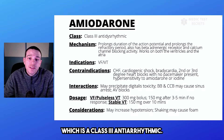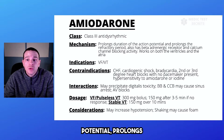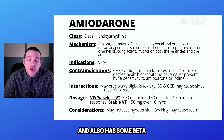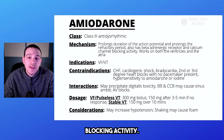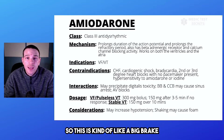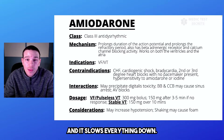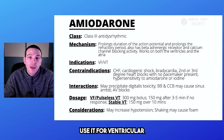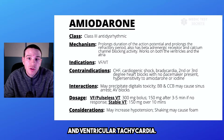Next, we have amiodarone, which is a class 3 antiarrhythmic. It prolongs the duration of the action potential, prolongs the refractory period, and has some beta adrenergic receptor and calcium channel blocking activity. It works on both the ventricles and the atria — it slows everything down. We primarily use it for ventricular arrhythmias like ventricular fibrillation and ventricular tachycardia.